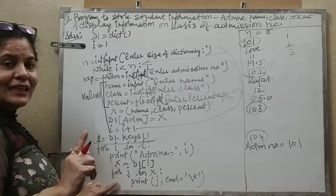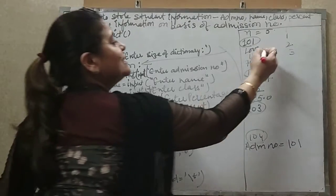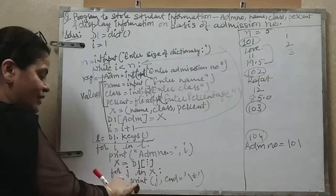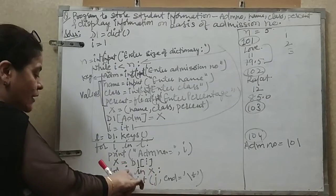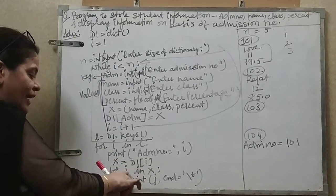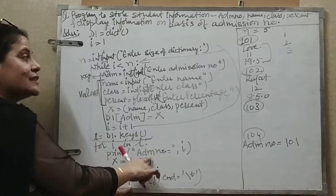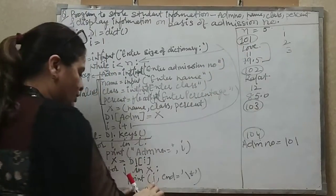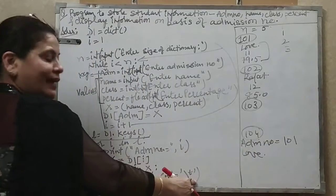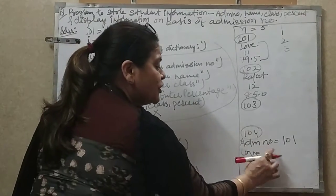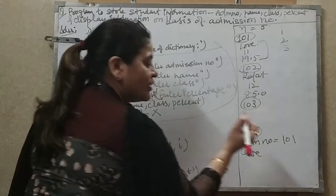Now the value of X contains three values, so I have taken one more loop inside it. That is for j in X. J will contain the value of X. X gets the first value as Love, so it will print me as Love, comma, end equals backslash T means it will continue with the same line but gives five spaces in it.